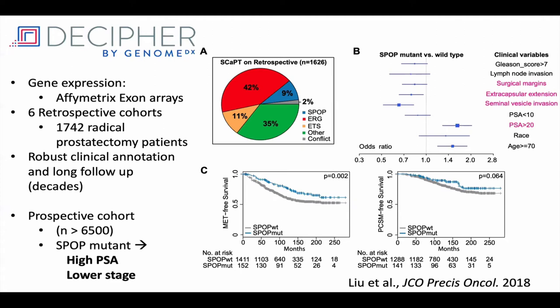We deployed this classifier in collaboration with GenomeDX — now Decipher Biosciences — which makes a clinically utilized gene expression test using Affymetrix microarrays for transcriptome-wide profiling from patient tests. We looked at six retrospective cohorts of over 1,700 radical prostatectomy patients with decades of follow-up and robust clinical annotation, and used this classifier approach to define molecular subtypes. About 10% were predicted to be SPOP mutant and a little over 40% were ERG positive, consistent with prior data. Patients with SPOP mutant tumors did a little bit better in metastasis-free survival and prostate cancer-specific mortality.